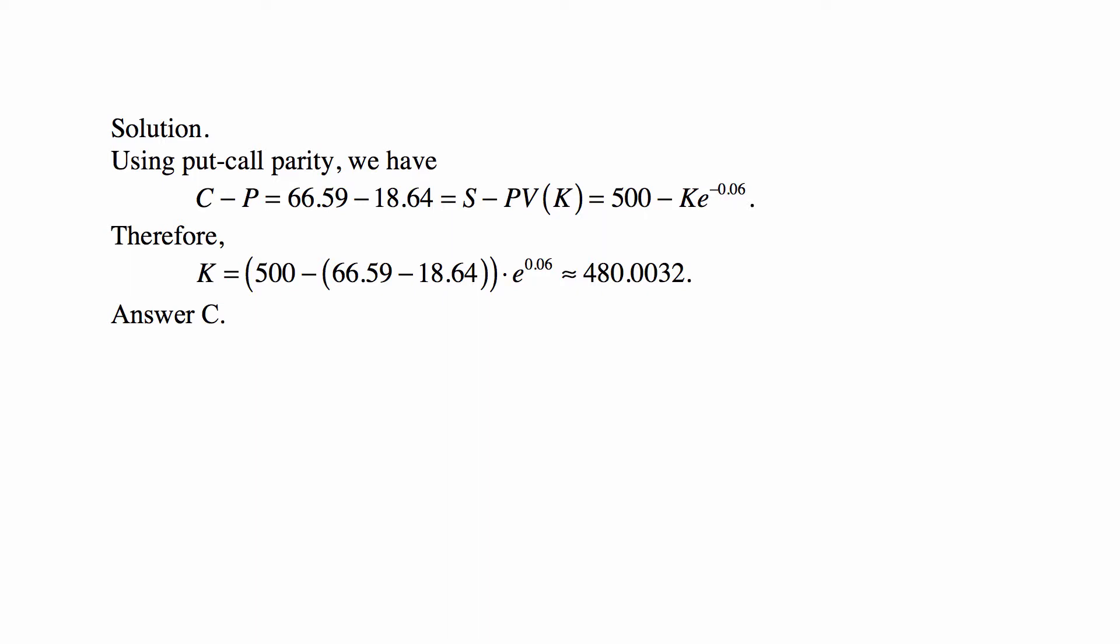We plug in those prices: 66.59 minus 18.64. The stock price is 500. The present value of the exercise price is K times e to the minus 0.06.